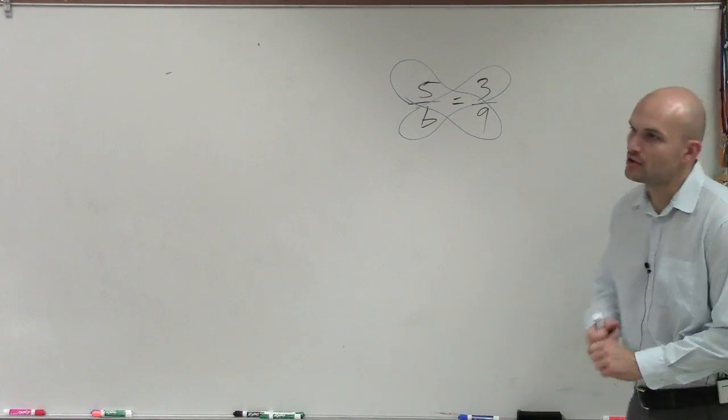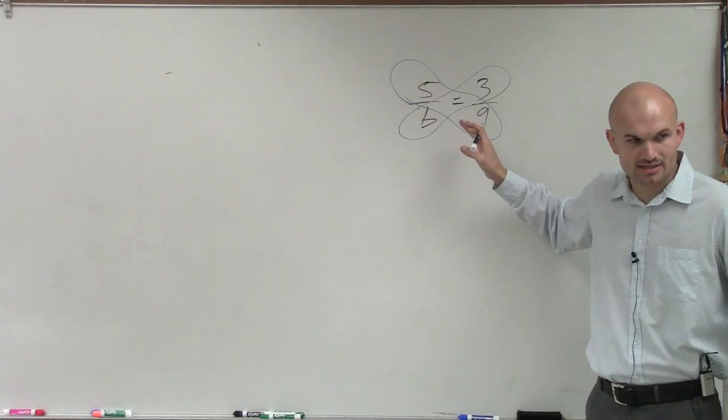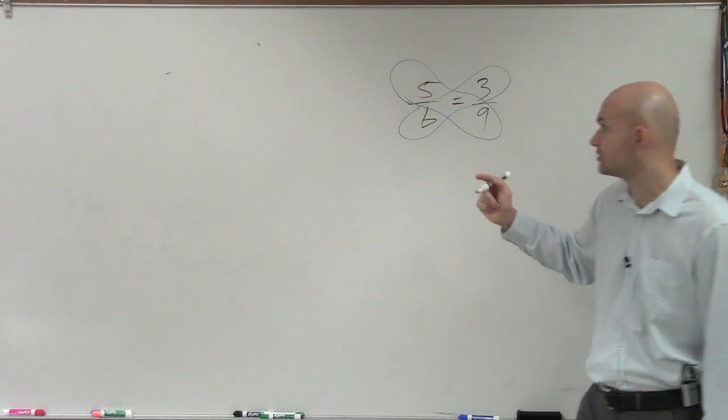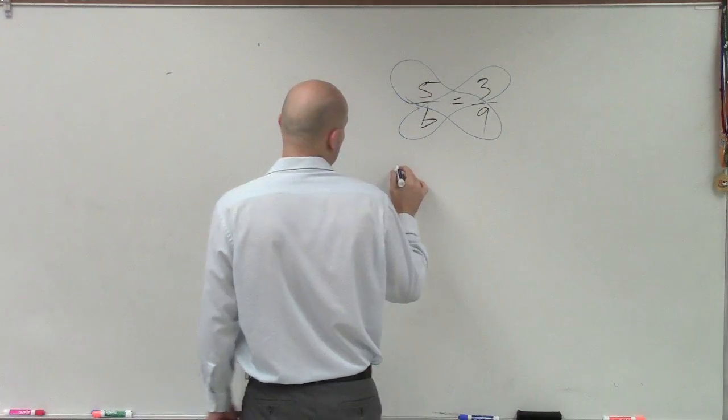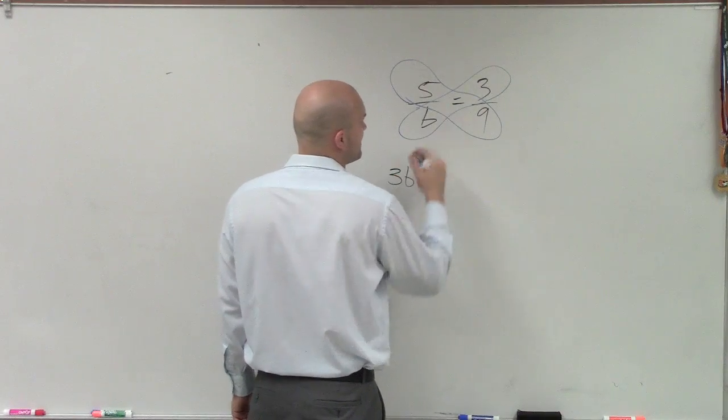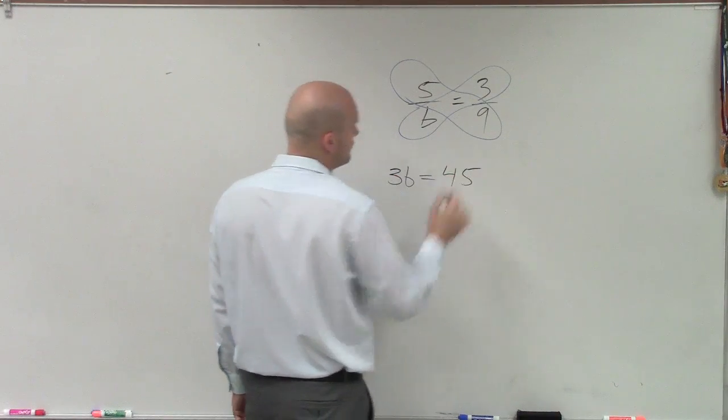By cross multiplication, the product of one cross equals the product of the other cross. So 3 times B or B times 3 is 3B equals 5 times 9, which is 45.